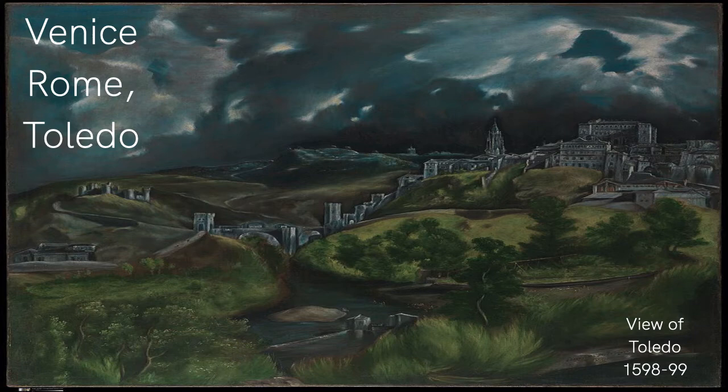Despite this setback, El Greco chose to remain in Toledo. This was a smart decision because his work gained popularity and he established a career there. It was during this period that the majority of his most famous works were painted. He had one son who grew up to be an artist and worked with him in the family workshop. El Greco died in 1614 at the age of 73.